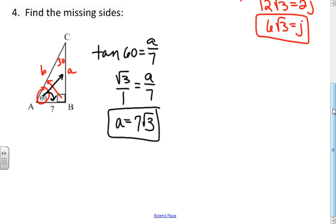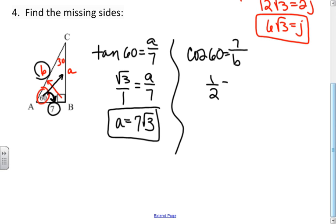If I want to find b, in relation to what I know and what I want, I'm talking about the adjacent side and the hypotenuse. So adjacent and hypotenuse is cosine of 60 equals 7 over b. The cosine of 60 is 1 half. If I cross-multiply, I have b is 14.